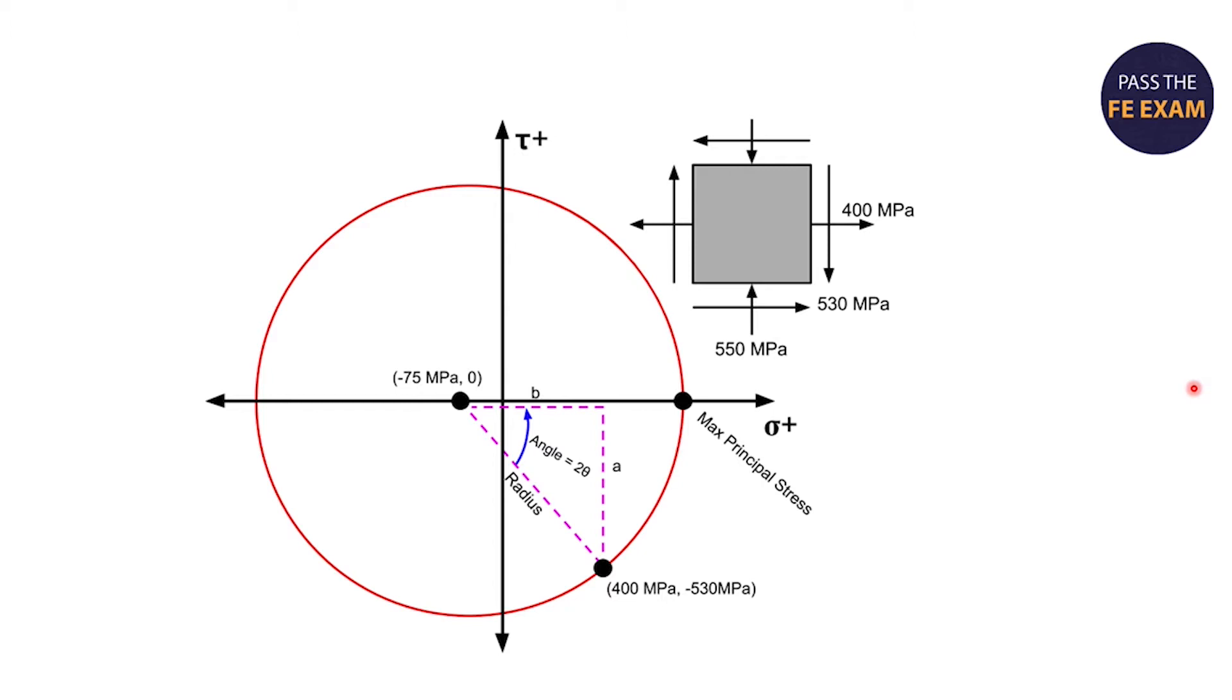Step two, draw a right triangle from the center of the Mohr's circle to a known point along the circle. Determine the Mohr's circle's angle between the known point and the sigma axis or x-axis, which is where the principal stress occurs. That will be the Mohr's circle rotation angle needed to get to a principal stress state. And then finally, step three, convert the Mohr's circle's rotation angle needed to get to a principal stress state to the stress element's angle needed to get to a principal stress state.